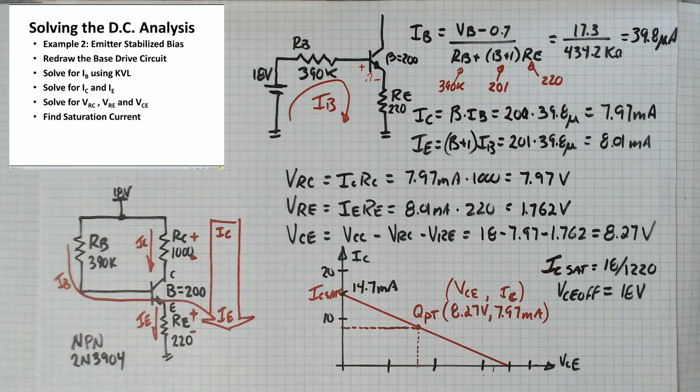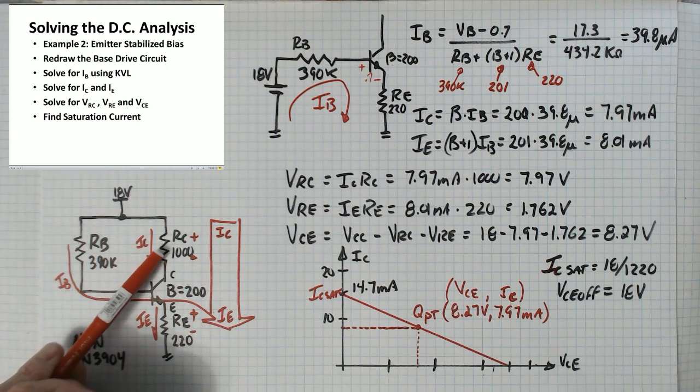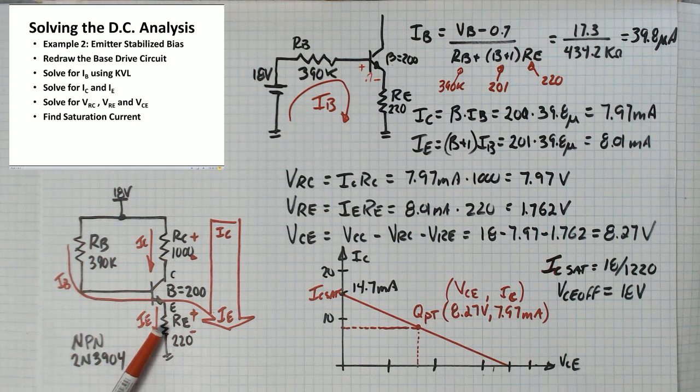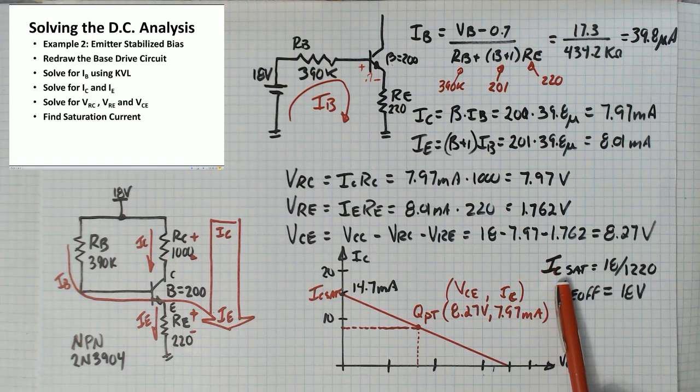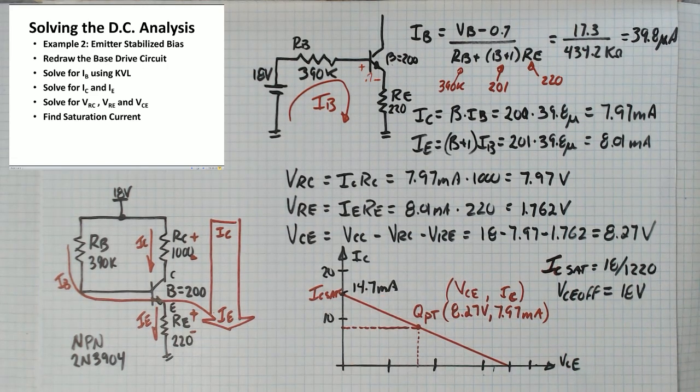The next step is to start drawing the graph and for that we find the saturation current. We think of the transistor as a short and we figure out how much current goes through it. So it's going to be 18 volts over the sum of these two resistors. So IC sat is going to be 18 over 1220, 14.7 milliamps.